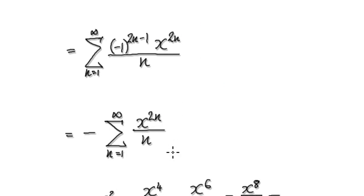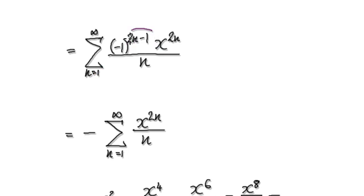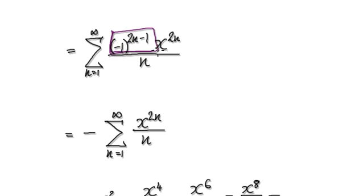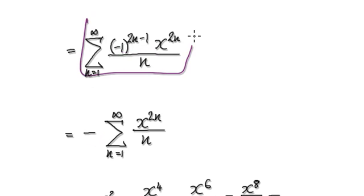Now looking at this, this exponent is always an odd number. The minute you see this, you should be able to recognize that this is an odd number. So negative 1 to the power of an odd number will always be negative. So this will always be negative 1. So you can take it out here, and that will then give you this. So this whole thing here simplifies to this.